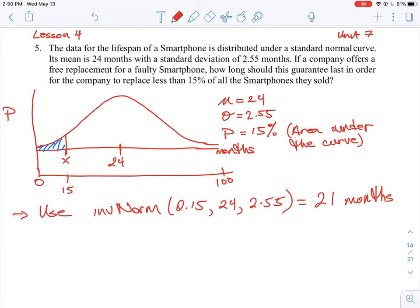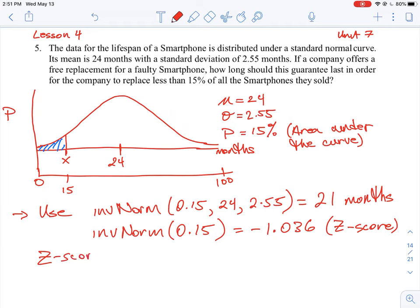Now, if you want to do it another way, you can also just use the inverse norm function to find the Z score of 15%. So if you just put this argument in by itself, you will get a value of negative 1.036, but this is not correlated to your data just yet, this is just the standardized Z score. So if you remember, the Z score means the mean is 0, and numbers to the left are negative, and the numbers to the right are positive for the Z score. So then you can use the Z score formula.